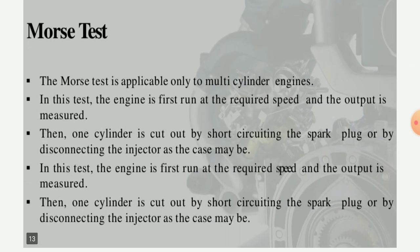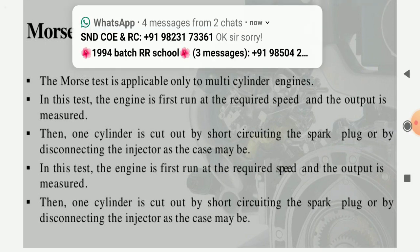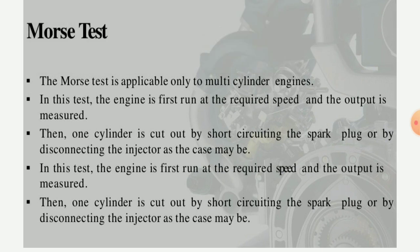The kind of test we can carry out is the Morse test. The Morse test is applicable only for multi-cylinder engines. In this test, the engine is first run at the required speed while the output is measured, then one cylinder is cut off by short-circuiting the spark plug or by disconnecting the injector.